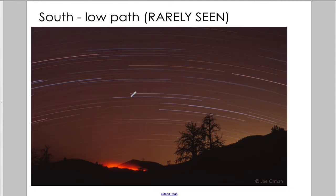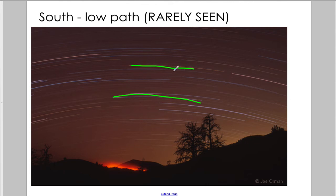Now, the south — depending on how high above the horizon you look, you'll see a whole bunch of different things. Usually they'll look kind of like curves. The higher up you look, the more flat they look, and eventually if you look high enough, they'll even have a curve in the opposite direction.